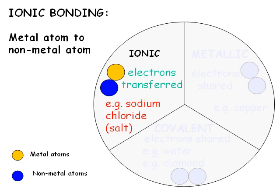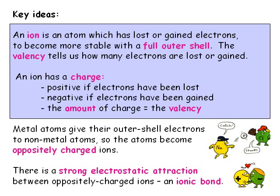We'll start by looking at how metal atoms transfer electrons to non-metal atoms in order to form ionic bonds. First, we need to know what an ion is. An ion is an atom which has either lost or gained outer shell electrons. Each time an atom does this, the number of protons no longer equals the number of electrons, so an ion has more or less electrons than protons. And so an ion is a charged particle, whereas atoms have no overall charge.